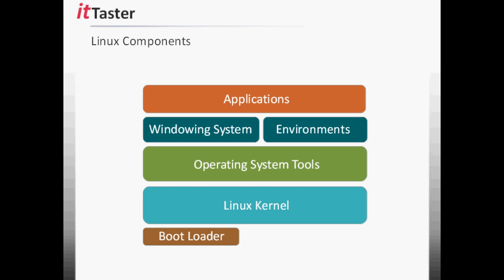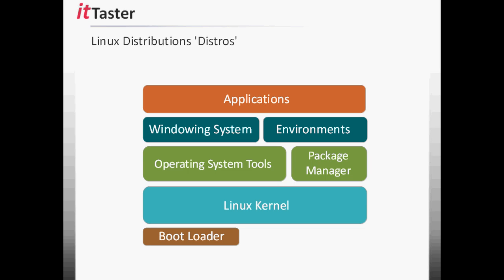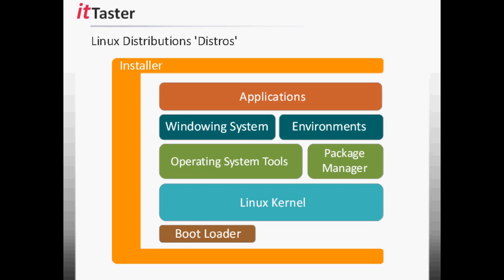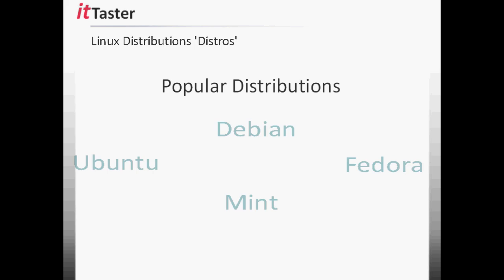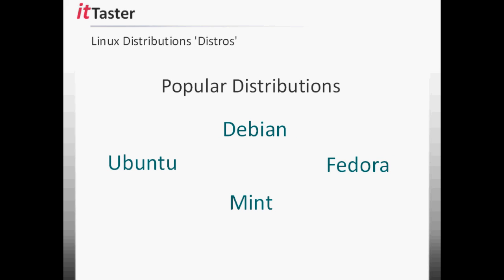The next thing we need to talk about is Linux distributions, or distros as they're known. A Linux distribution usually consists of all of the components we've discussed, plus a package manager to add and remove software applications. An installer is also added to provide end users with an easy way to install the distribution. Examples of popular distros include Ubuntu, Debian, Mint and Fedora. There are hundreds of Linux distros available, and some are commercially maintained and supported, such as Red Hat Linux and SUSE Linux.